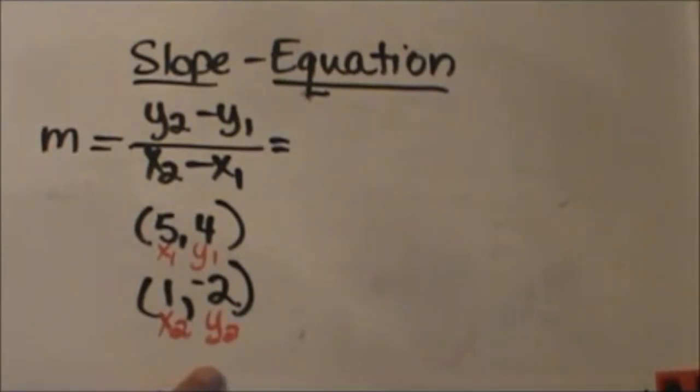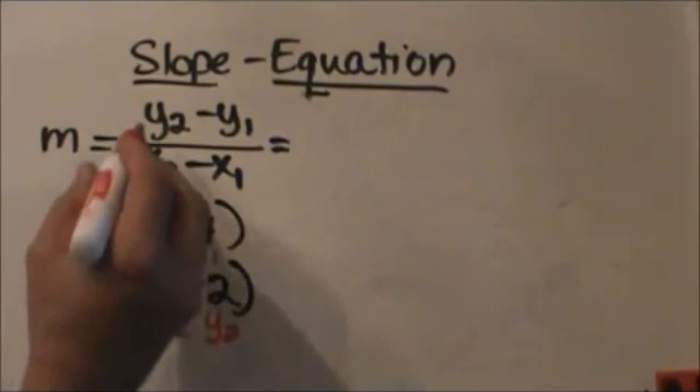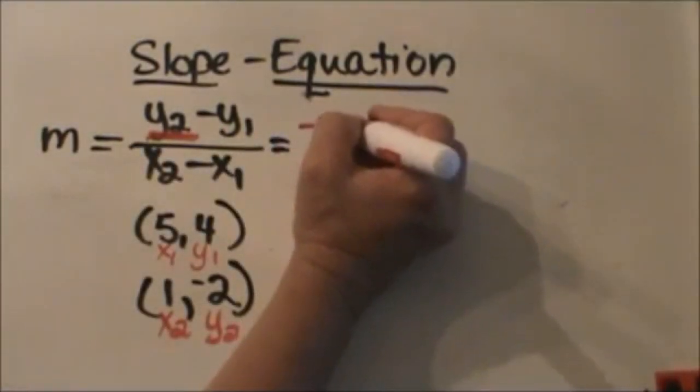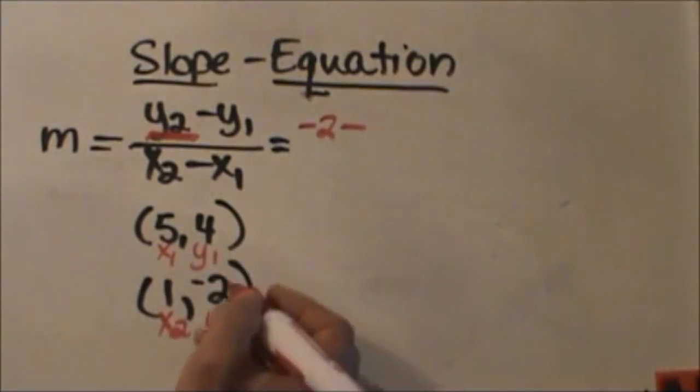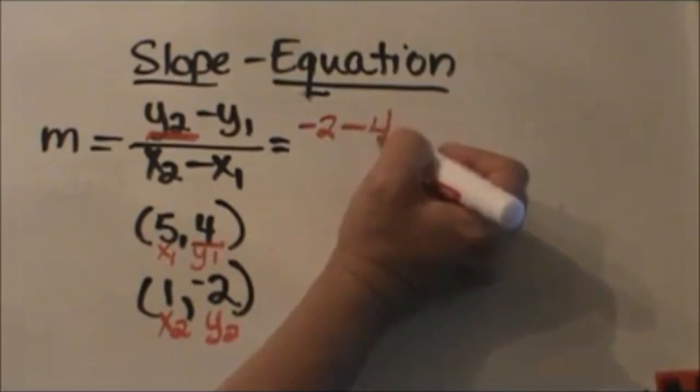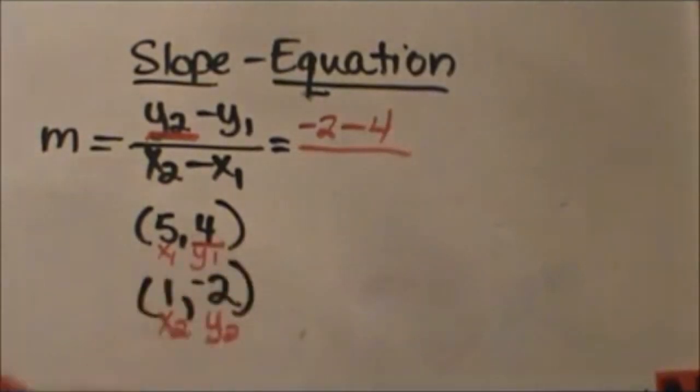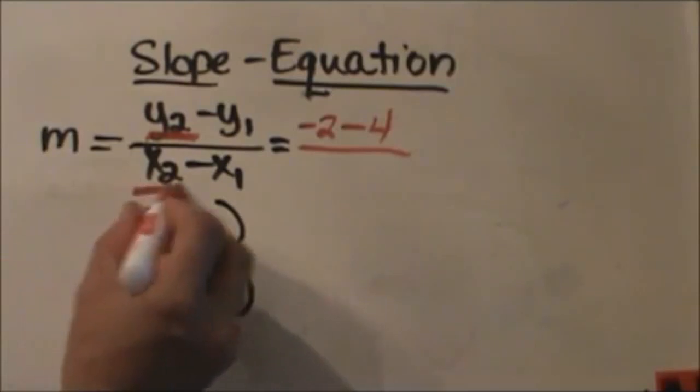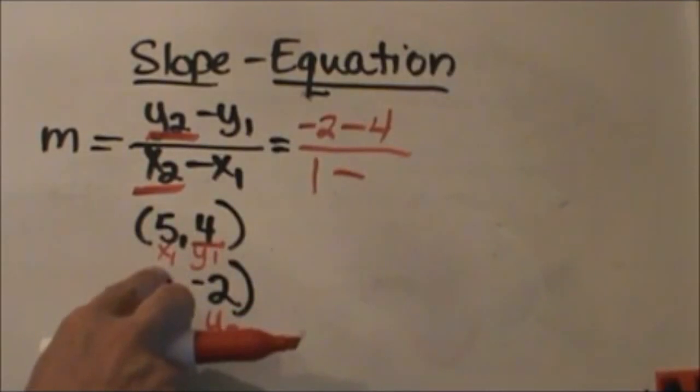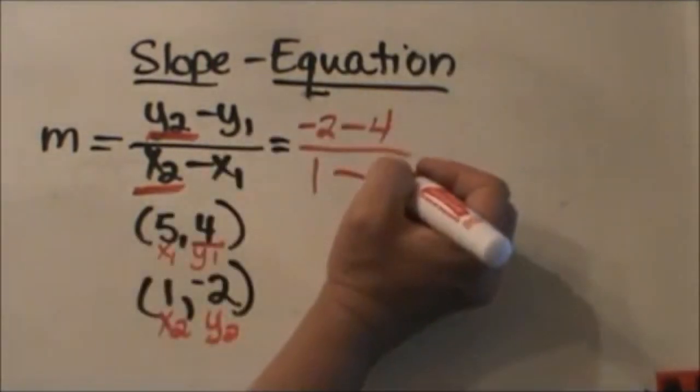Now I'm going to plug it into the equation. So I'm going to take my y2 which is my negative 2 and I'm going to subtract my y1 or my 4. Then I'm going to do the same thing with the x coordinates. My x2 is positive 1 minus my x1 is positive 5.